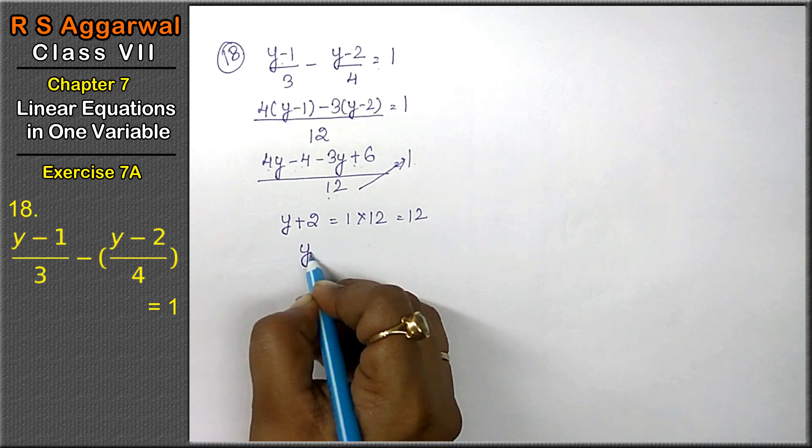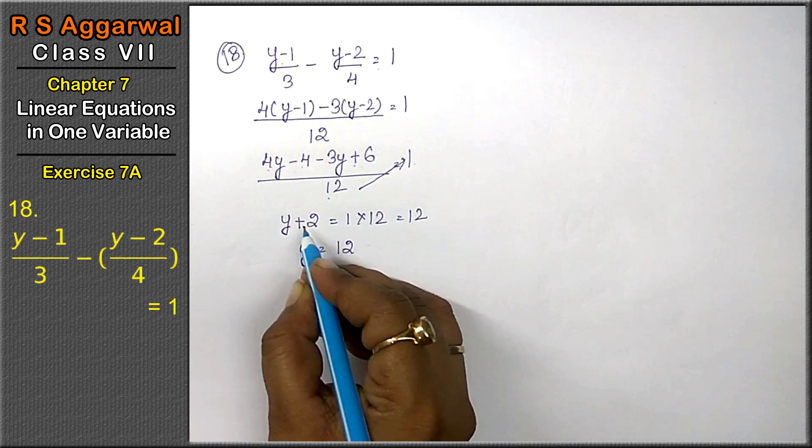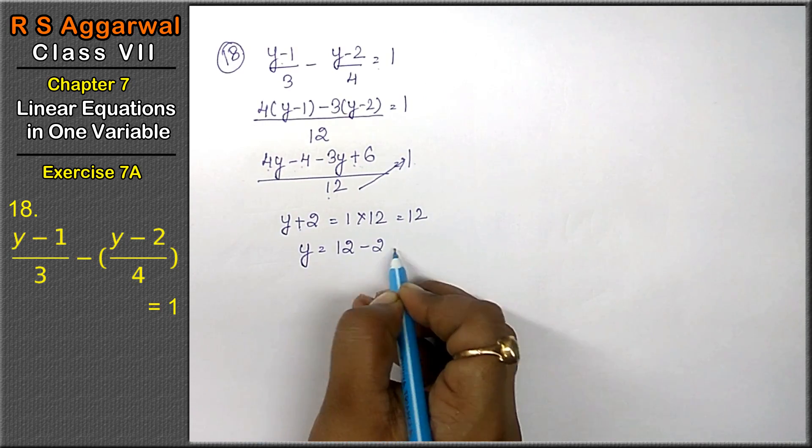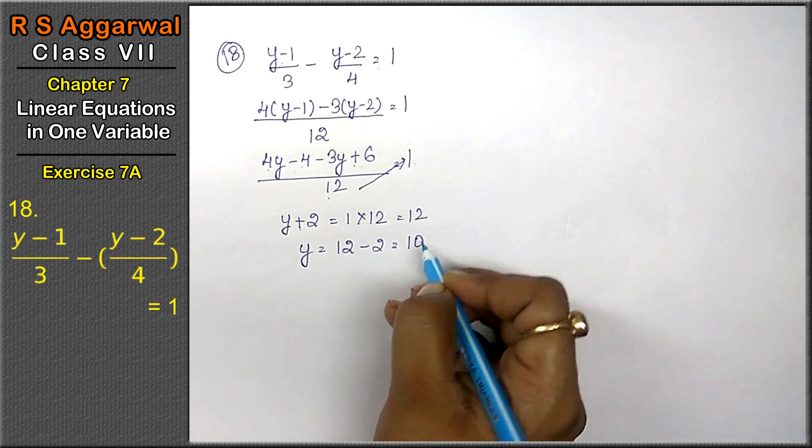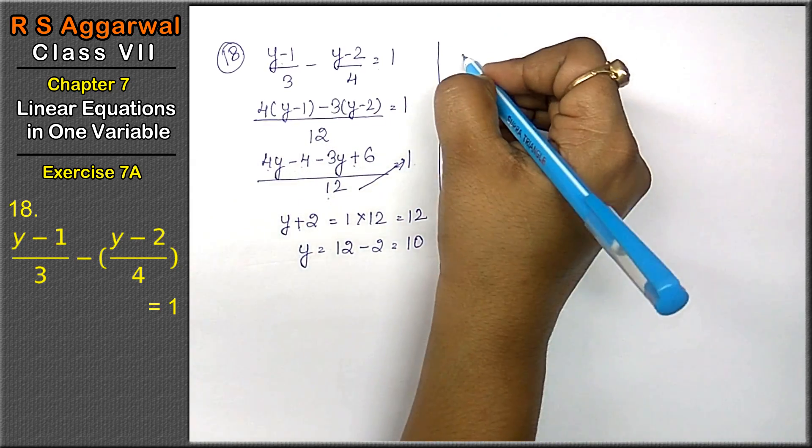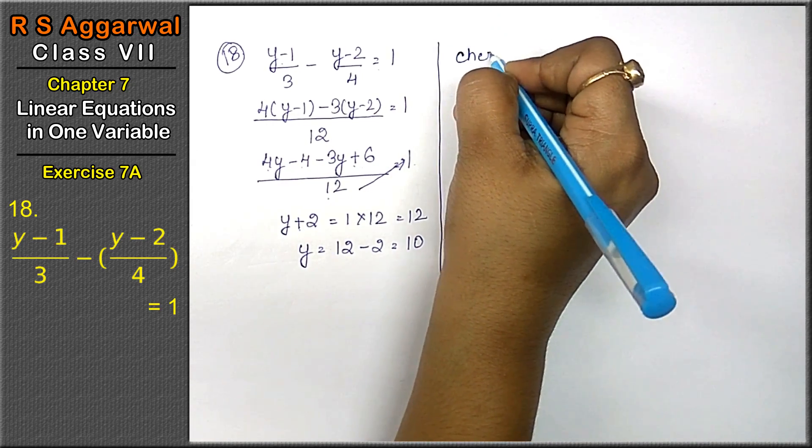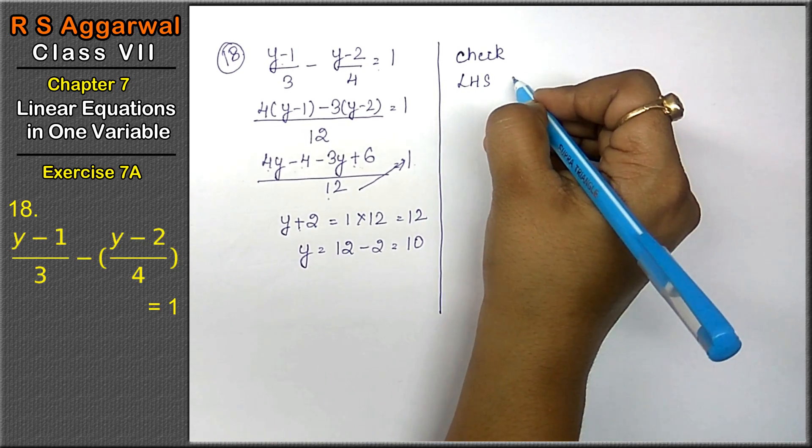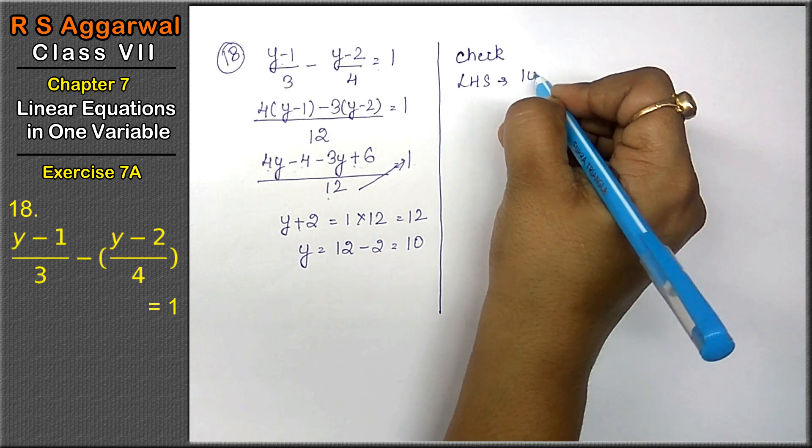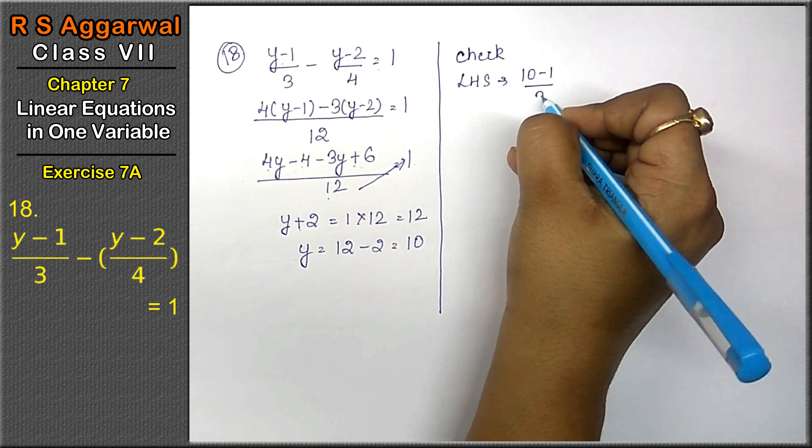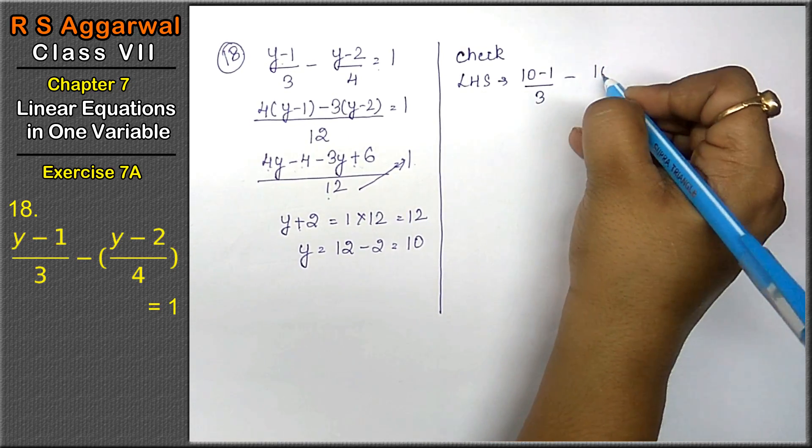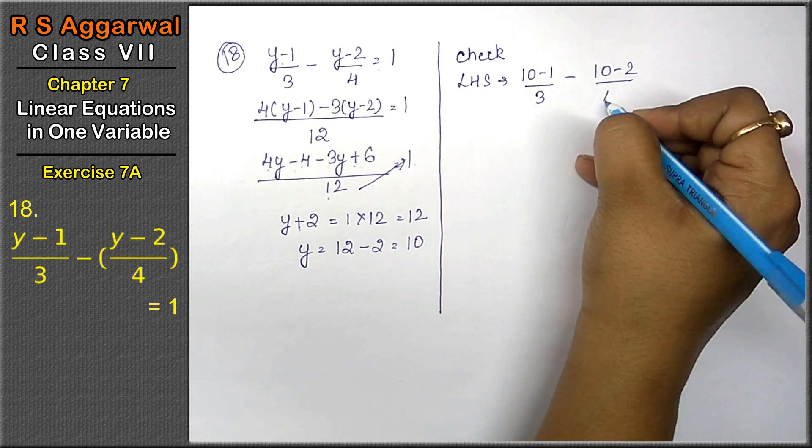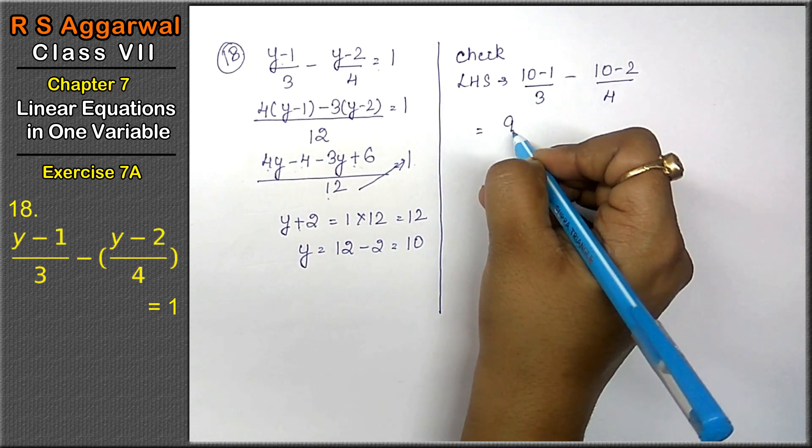Now y = 12 - 2, so y = 10. Let's check our answer. Left-hand side: (10-1)/3 - (10-2)/4.